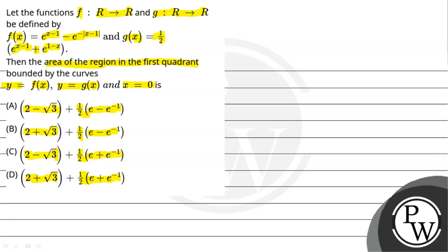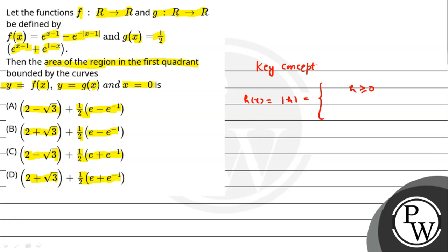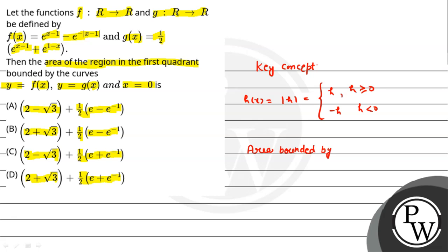So first, let us understand the key concept for this problem. The key concept is: what is the mod function? If we have a function H(x) = |h|, then it opens as h when h ≥ 0, and as -h when h < 0. Also, the area bounded between two curves: if we have two curves k(x) and p(x) from a to b, then the area A = ∫(a to b) [p(x) - k(x)] dx.